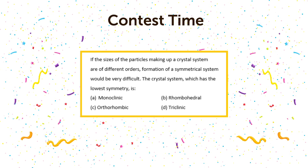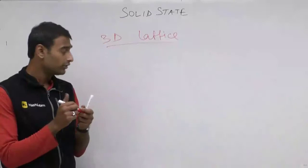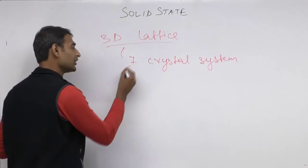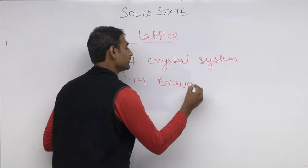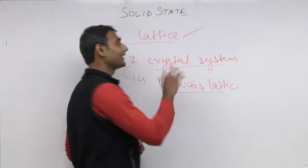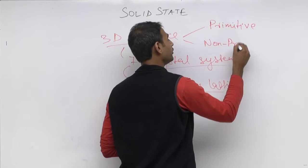Let us go back to today's class. We have completed the 1D and 2D lattice — now let us move to the 3D lattice. There are 7 types of crystal system, and variations within them give you 14 types of Bravais lattice. A unit cell can be of two types: a primitive unit cell or a non-primitive unit cell.